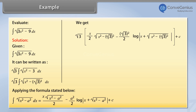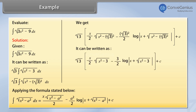Minus (√3)²/2 · log|x + √(x²−3)| plus c, where c is an arbitrary constant.